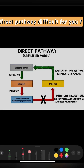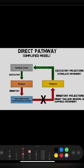Let's start discussing the direct pathway in an easier way. First, you have to remember the characters of the direct pathway — that is how we are going to learn this easily. The thalamus is a politician, and this thalamus has a right hand and left hand. The right hand and left hand of the thalamus are globus pallidus internus and substantia nigra pars reticulata.